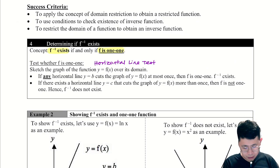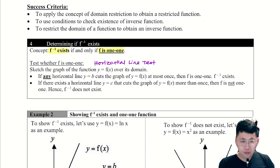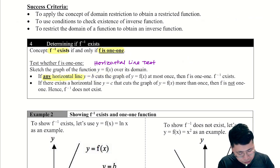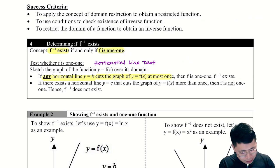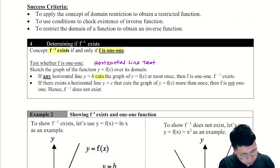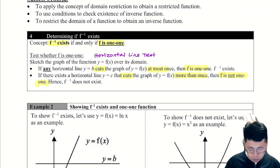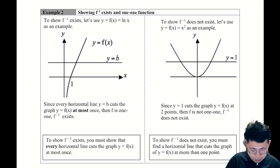To determine whether f is one-to-one, we use the horizontal line test. We sketch the graph, and if any horizontal line cuts the graph at most once, then f is one-to-one and f inverse exists. If it cuts more than once, then f is not one-to-one and f inverse does not exist.